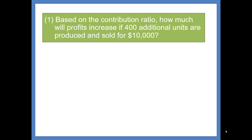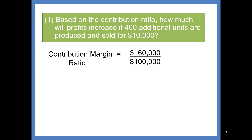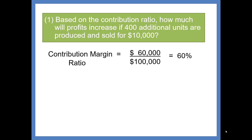Based on the Contribution Margin Ratio, how much will profits increase if 400 additional units are produced and sold for $10,000? We first compute the Contribution Margin Ratio: $60,000 divided by $100,000 equals 60%. We can now assume that once we break even, 60% of every sales dollar will be profit. So if sales increase by $10,000, the increase in profit should be $10,000 times 60%, or $6,000.